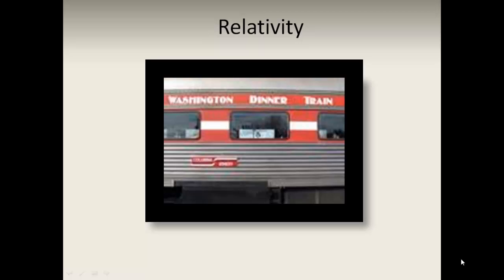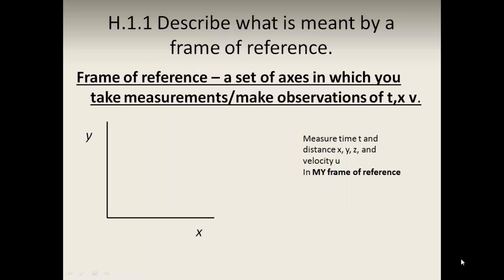You don't know whether you're moving, whether the other train is moving, whether you're both moving, or whether you're both still. This is what relativity is. First point: describe what is meant by a frame of reference. A frame of reference is a set